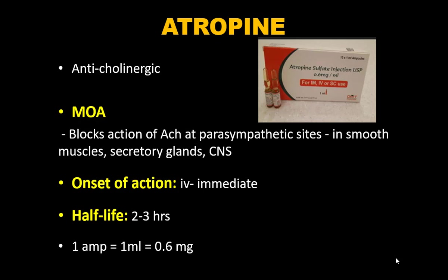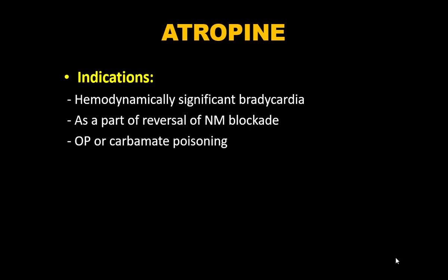Atropine is an anticholinergic drug that blocks acetylcholine at parasympathetic sites in smooth muscles, cardiac glands, and CNS. Onset is almost immediate; half-life is 2–3 hours. One ampoule contains 0.6 mg (sometimes 1 mg). Indications: hemodynamically significant bradycardia, reversal of neuromuscular blockade (mainly in pediatric anesthesia), and definitively as an antidote in organophosphate or carbamate poisoning.